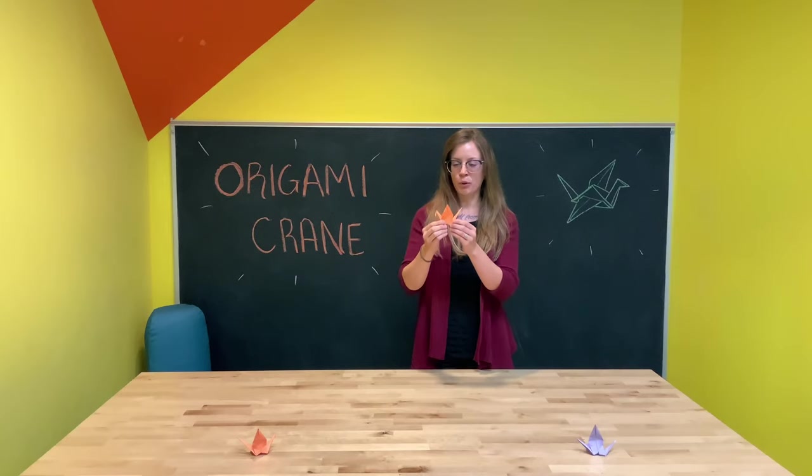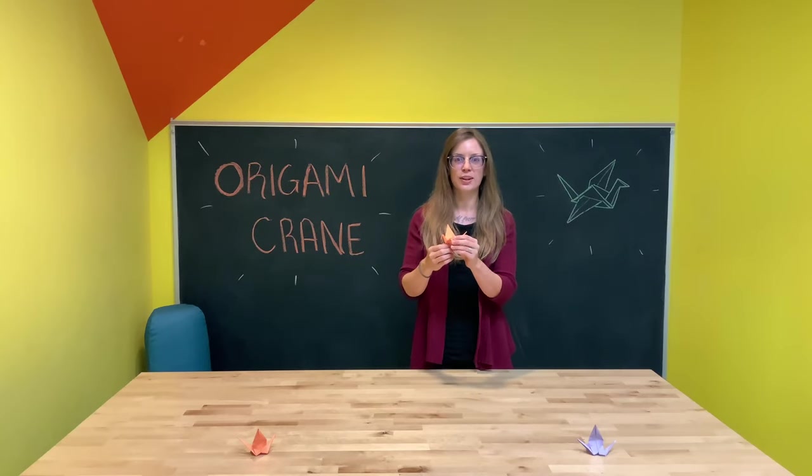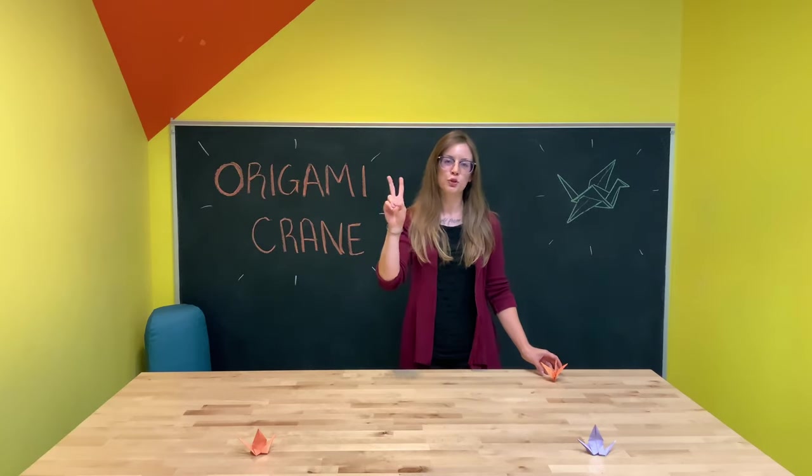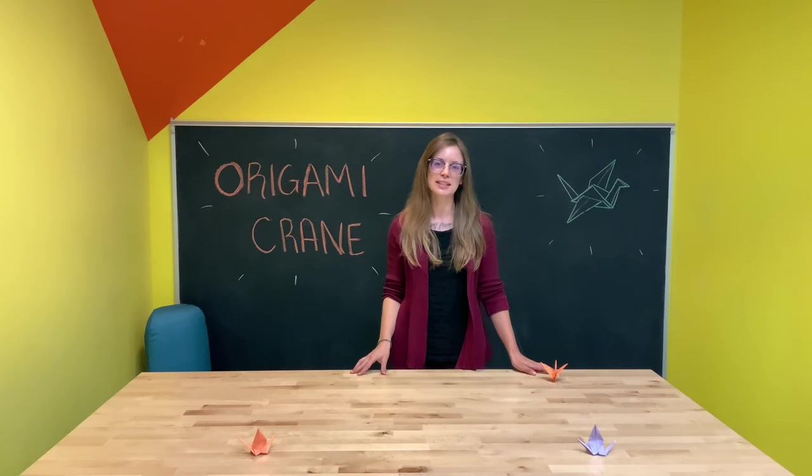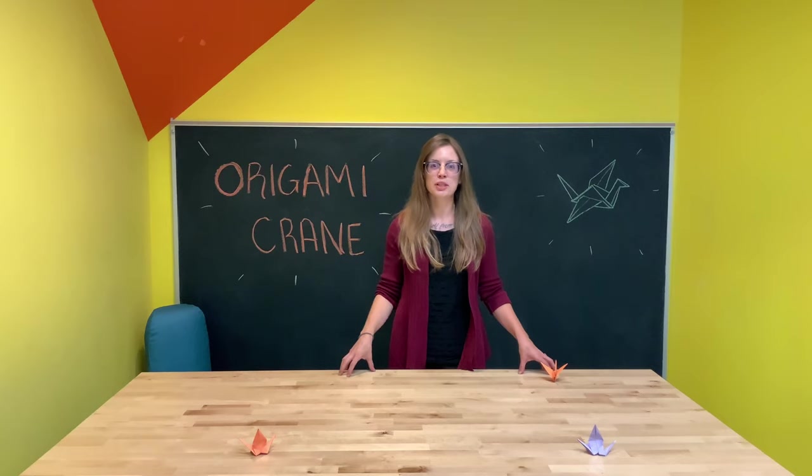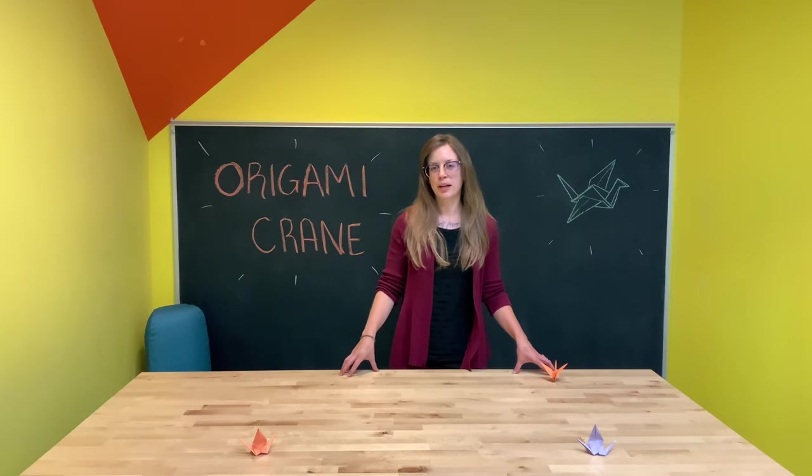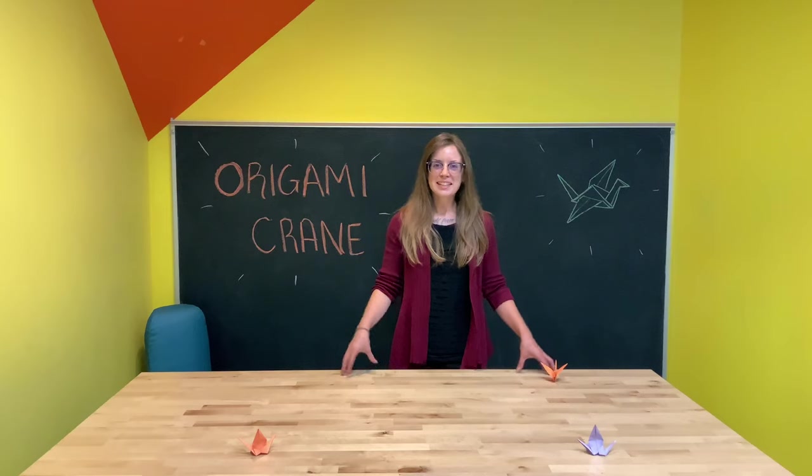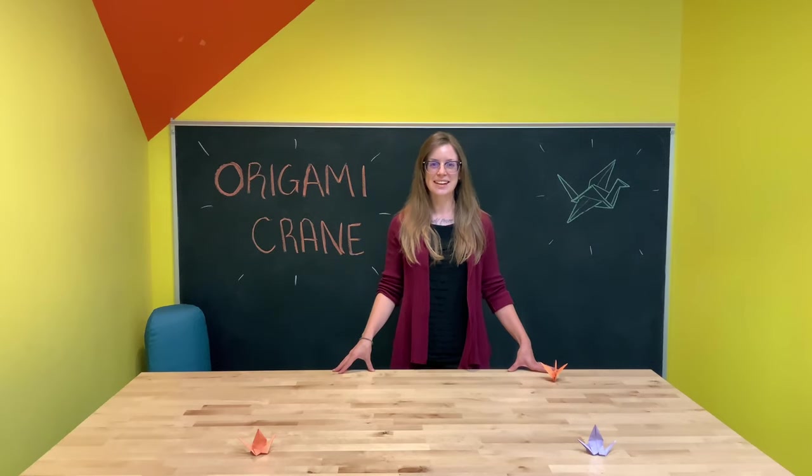Let's go ahead and take a look at how we fold these cranes so you can get started on those 1,000 cranes. Now today I've included two pieces of origami paper in your kits. So that'll get you started. But you can always purchase some more origami paper or make your own by cutting down some computer paper. Let's go ahead and get started and take a look at what's in our kits today.